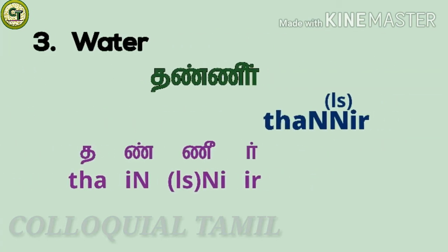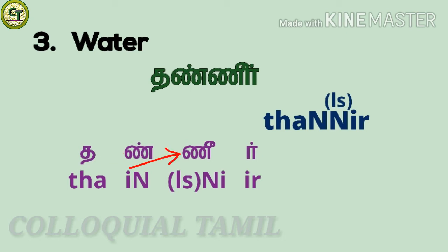For 'water': tannir. Ta, a short zone letter. Int, a consonant — this is big il, while pronouncing it your tip of the tongue touches the middle roof of your mouth. Then ni, a long zone letter — this is also big ni. Then ir, a consonant — this is small ir. Together: tannir.